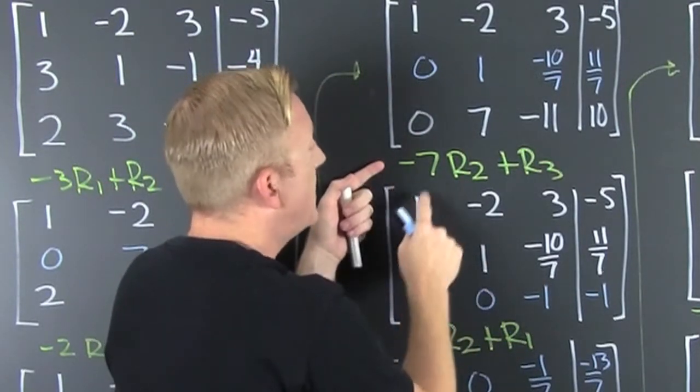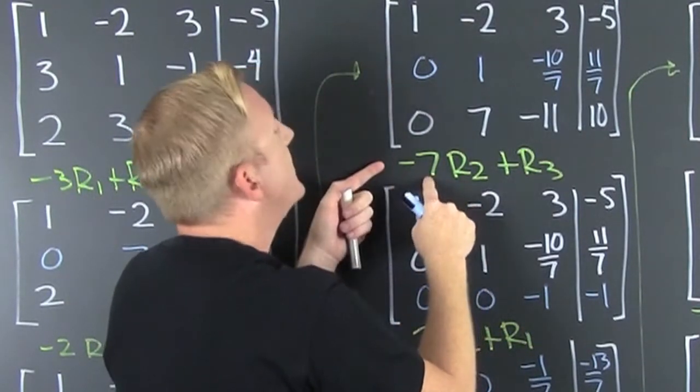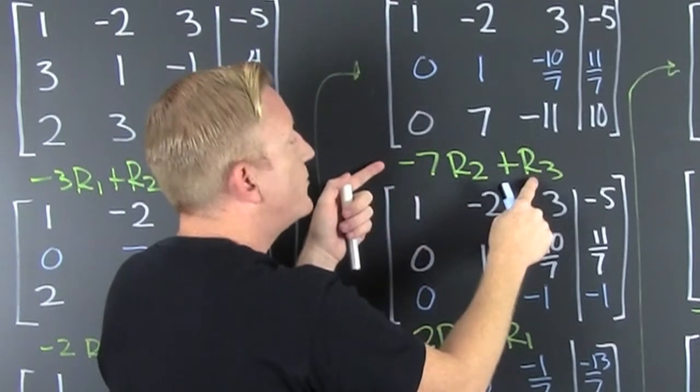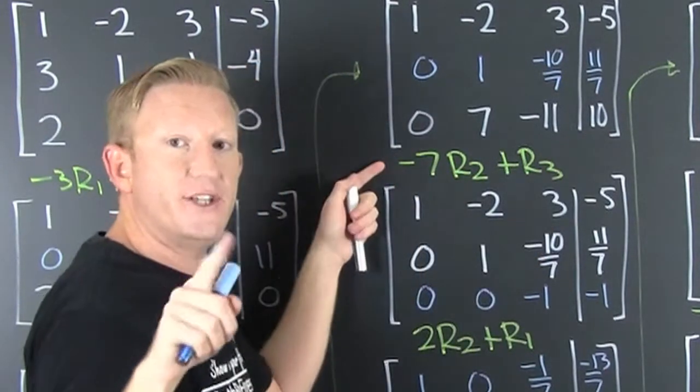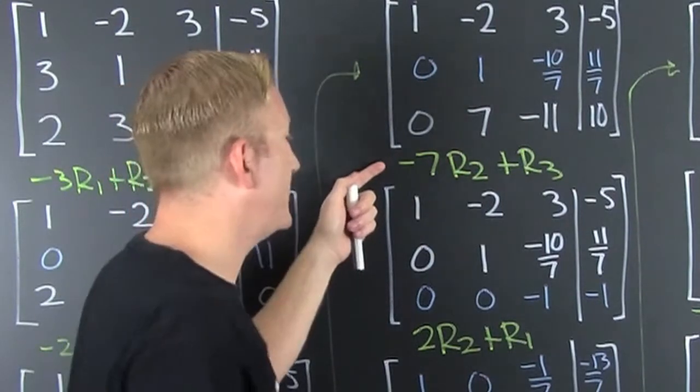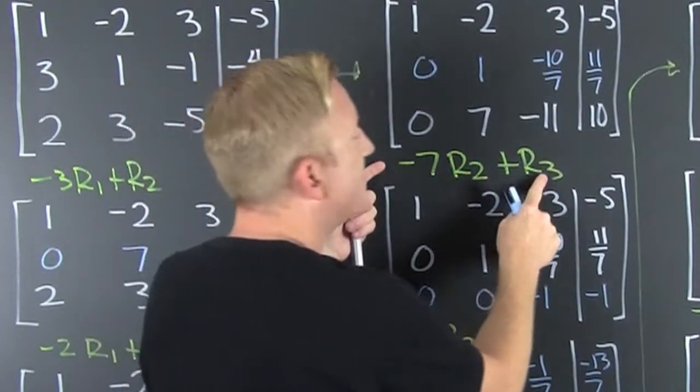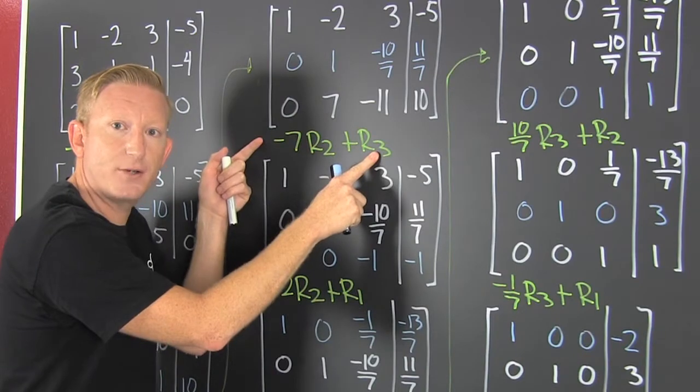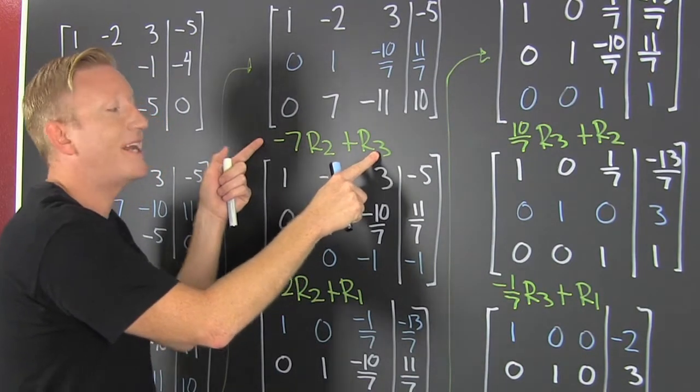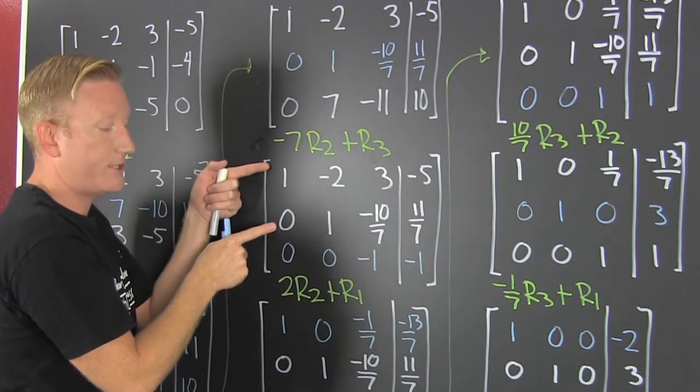So I multiply row 2 by minus 7 and add it to row 3. The only row that's changing from matrix C to matrix C with this notation is the back one. So then I rewrite the ones that aren't changing.